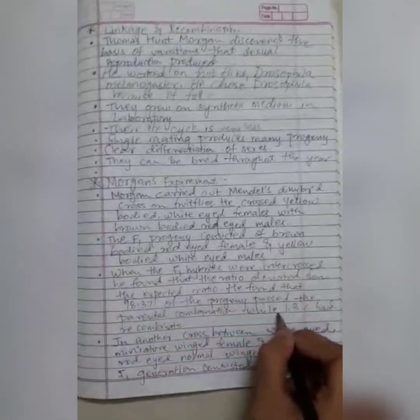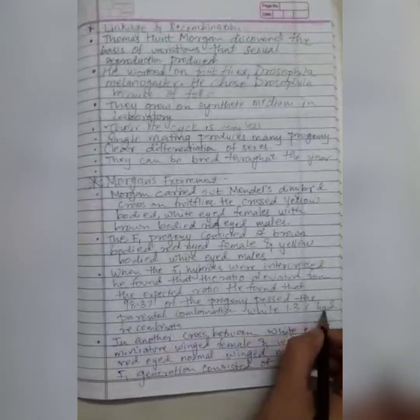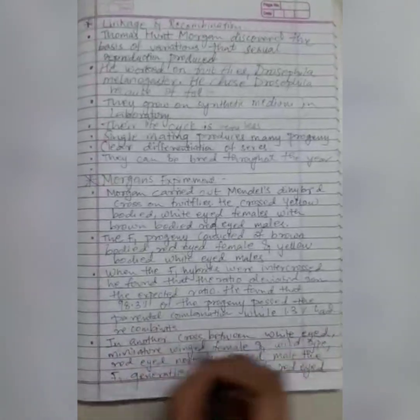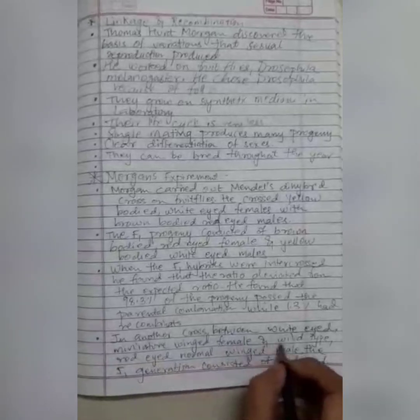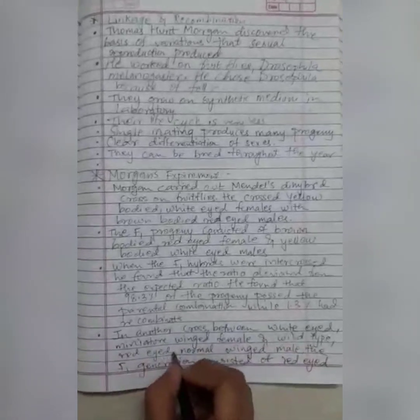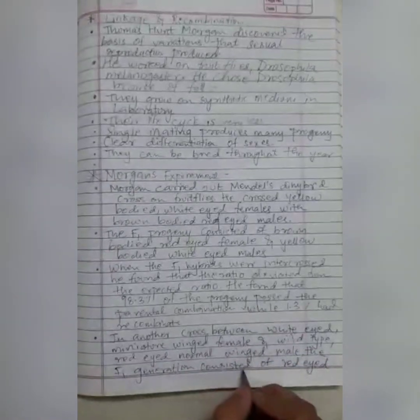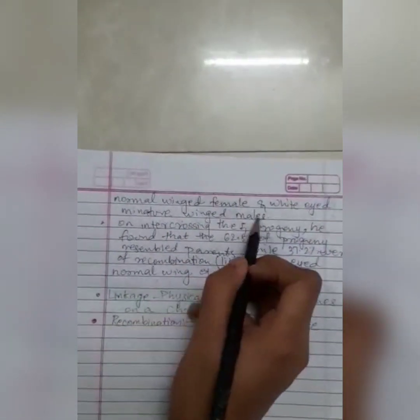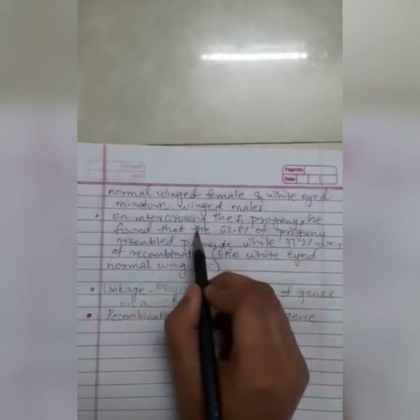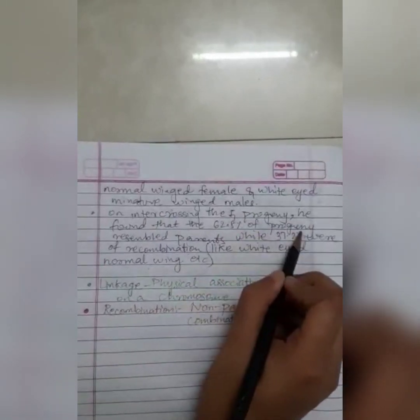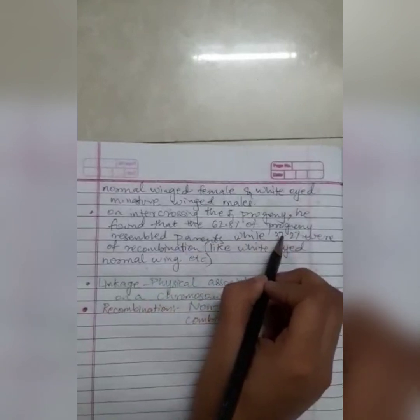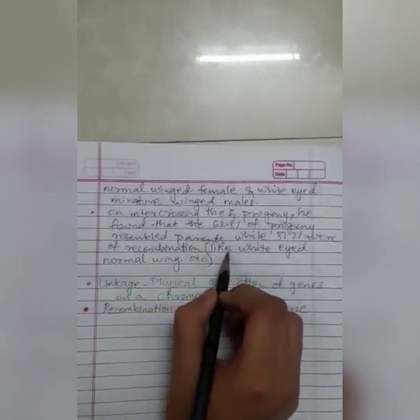In another cross between white-eyed and miniature winged female with wild-type red-eyed and normal winged male, the F1 generation consisted of red-eyed normal winged female and white-eyed miniature winged males. On inter-crossing the F1 progeny found out that 62.8% of the progeny resembled parents while 37.2% were recombination.